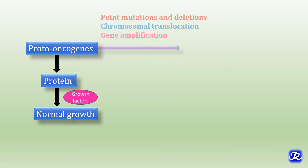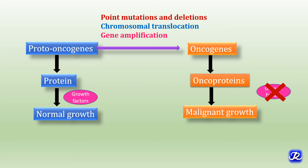When proto-oncogenes get mutated by various mechanisms like point mutations, deletions, chromosomal translocation, and gene amplification, they become oncogenes. Oncogenes are genes capable of causing cancer. When these oncogenes are expressed, they result in the formation of oncoproteins, and there is formation of mutated versions of all growth factors and receptors, ultimately resulting in malignant growth of cells.